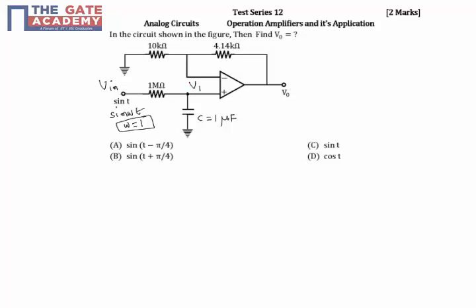Now what is the gain? The gain is, if I consider this as v1, the gain equals v_0 by v1. Because it is a non-inverting terminal, this will be one plus 4.14k divided by 10k. So gain equals 1 plus 4.14k by 10k.